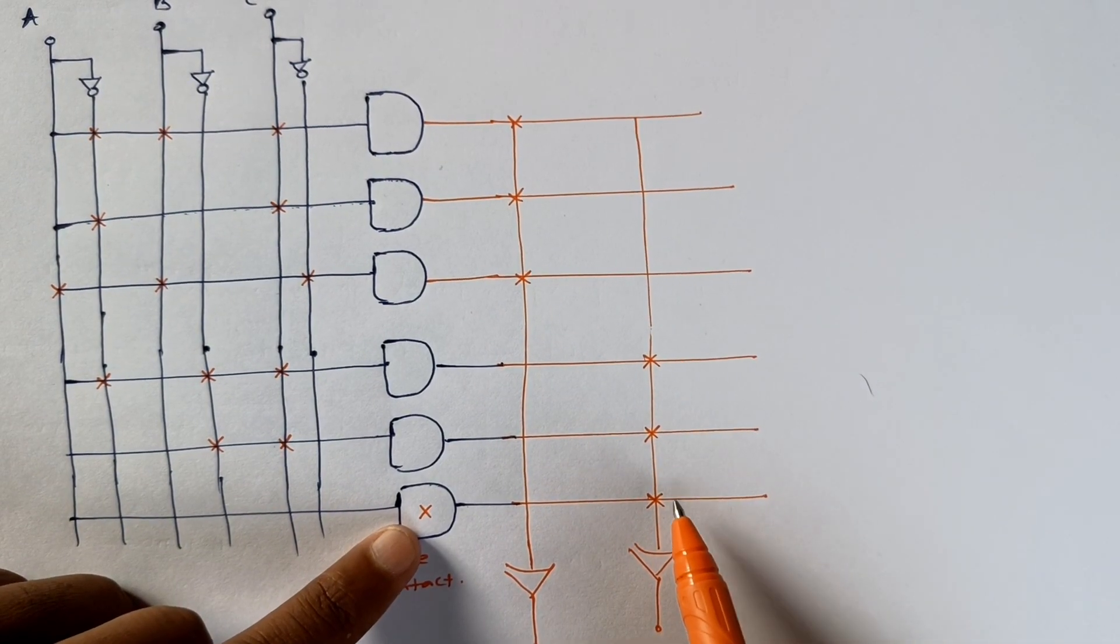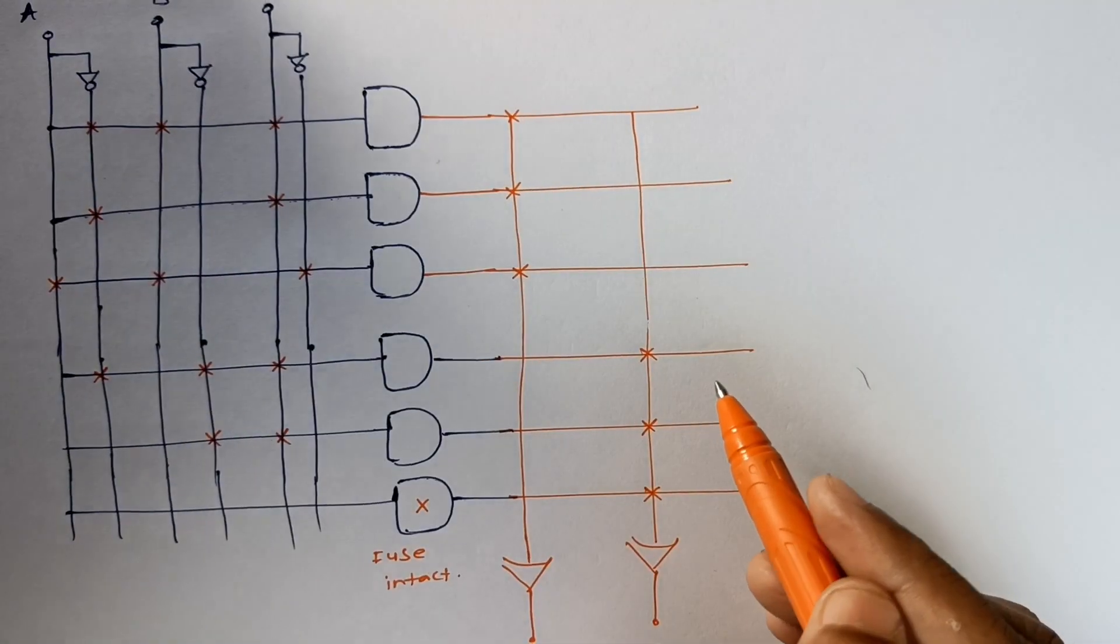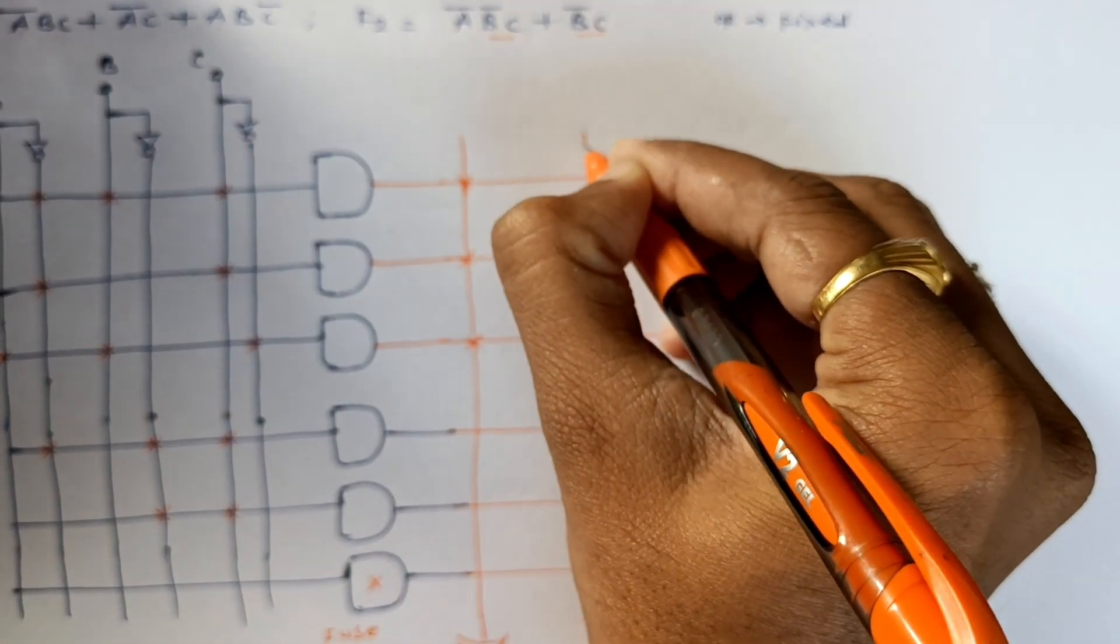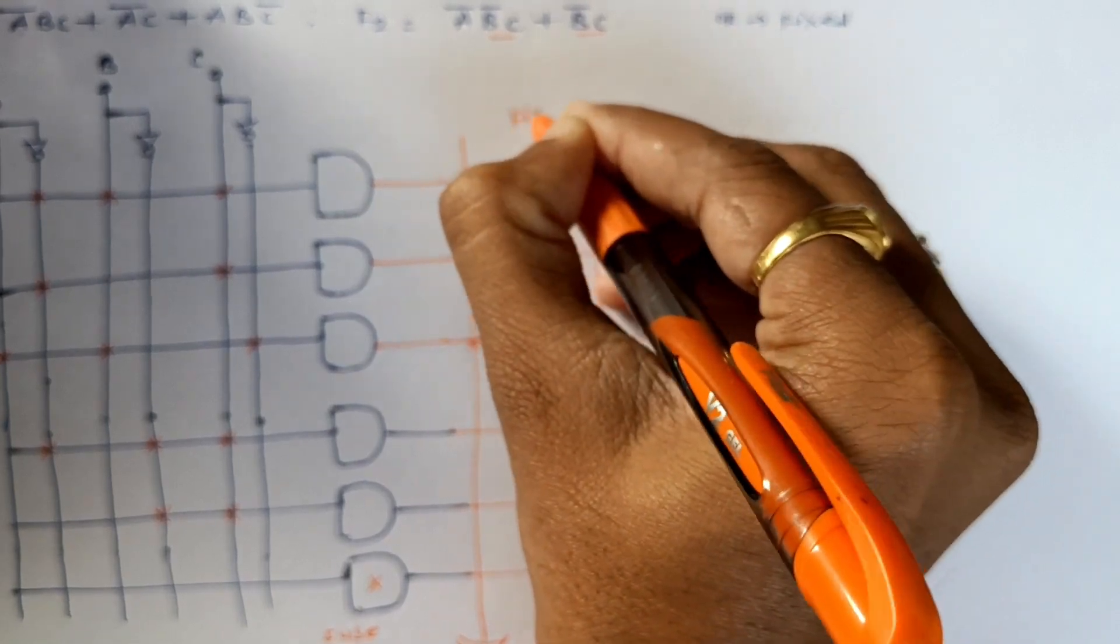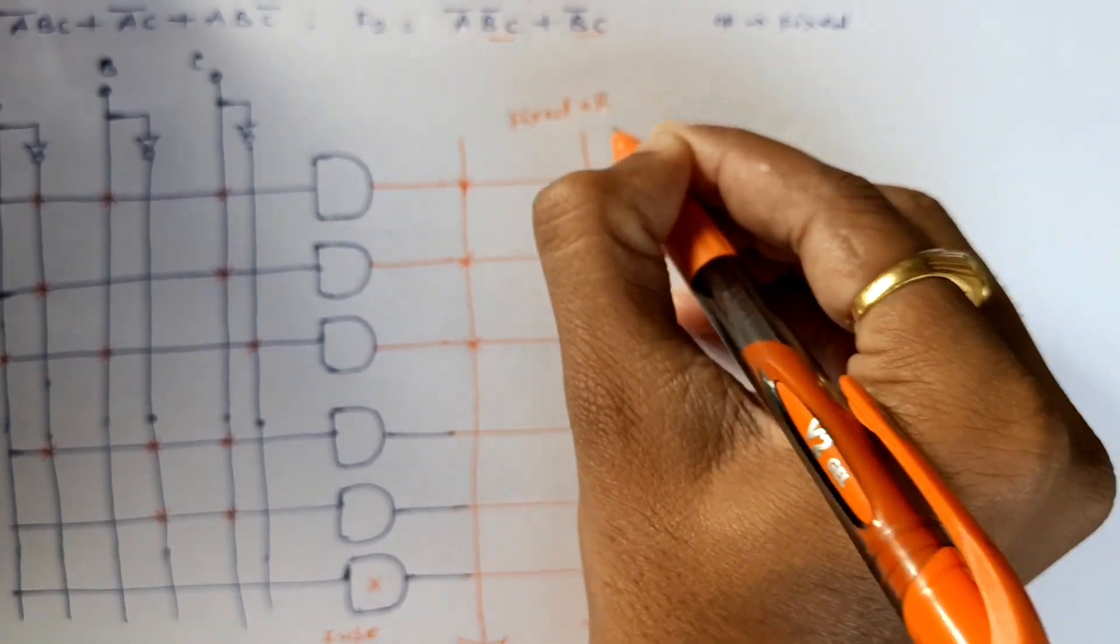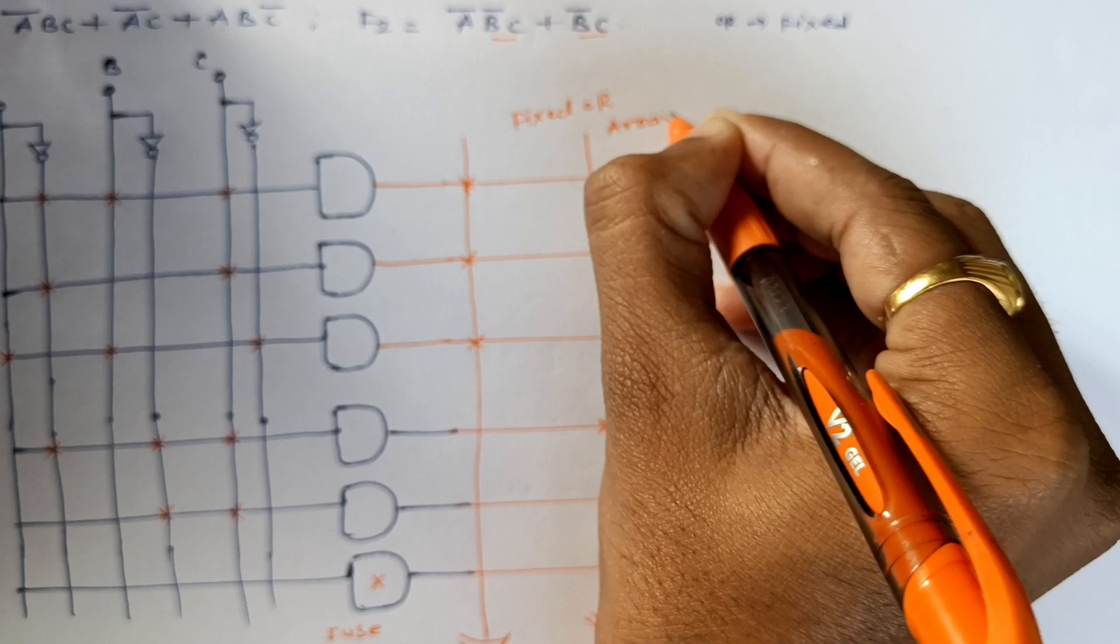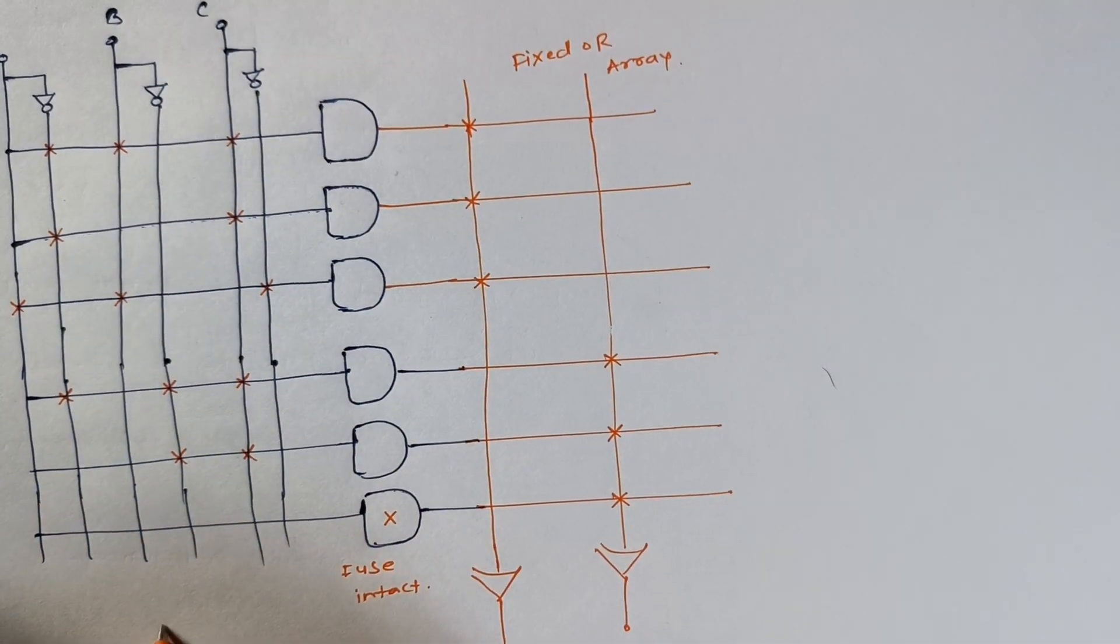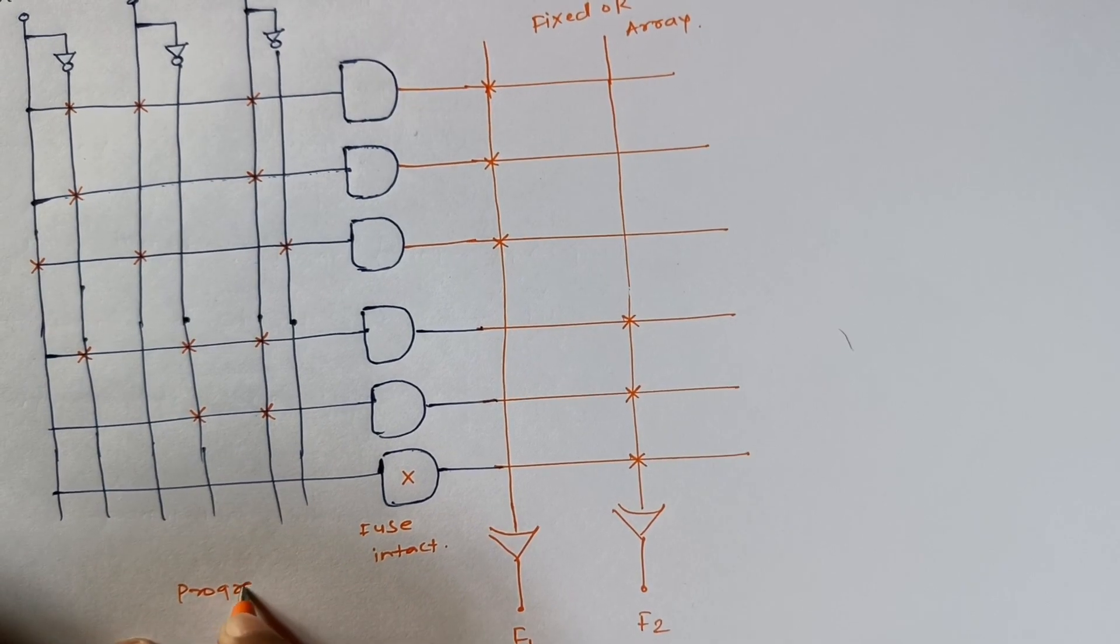But still it is marked because it is a fixed OR gate combination. So here is no input, so it will automatically be zero. So we will get the addition of these two terms.